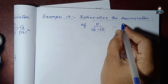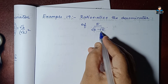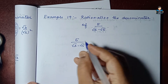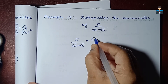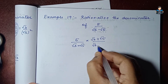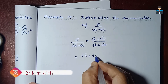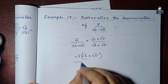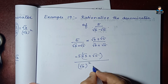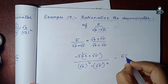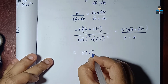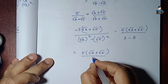Example 19: Rationalize the denominator of 5/(√3 - √5). We multiply and divide by the conjugate (√3 + √5). The denominator (√3 - √5)(√3 + √5) = 3 - 5 = -2. So we get 5(√3 + √5) / (-2), which simplifies to -5(√3 + √5)/2.